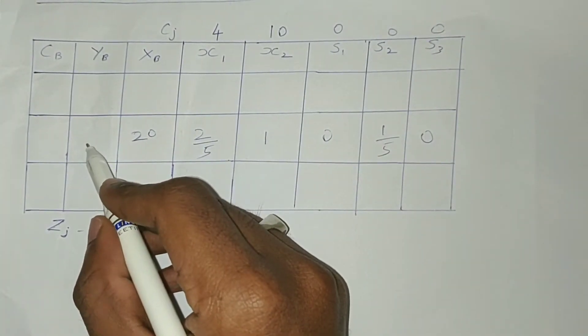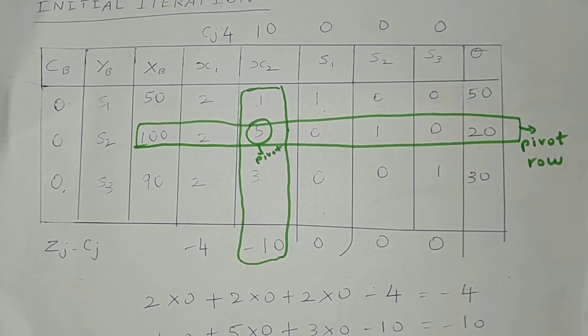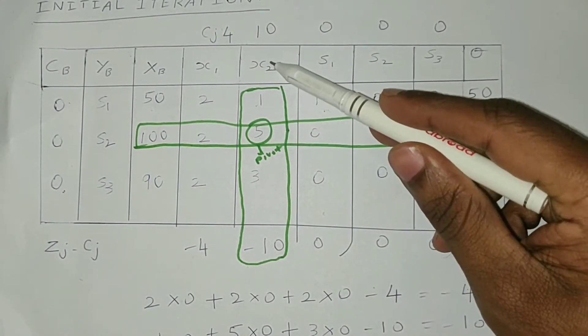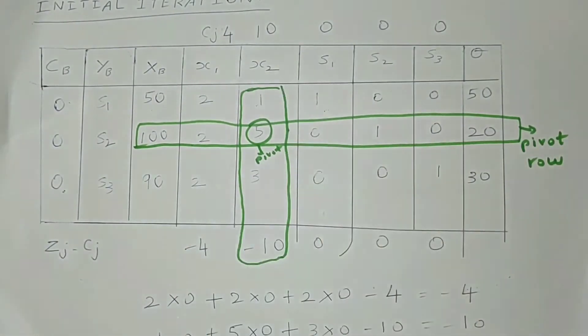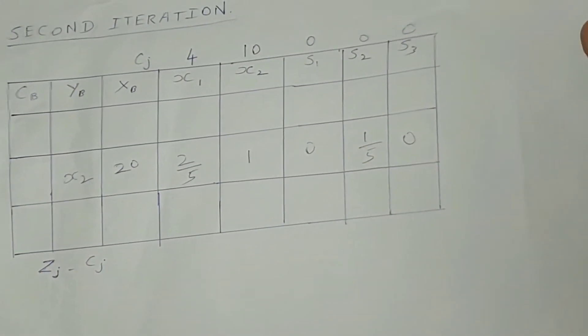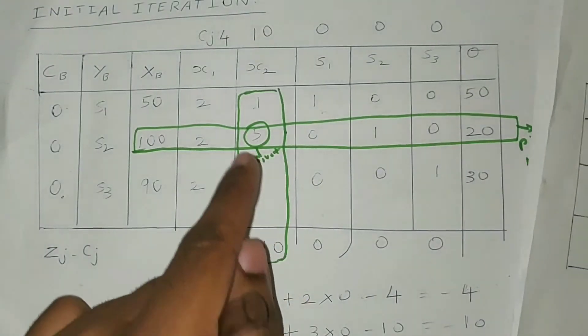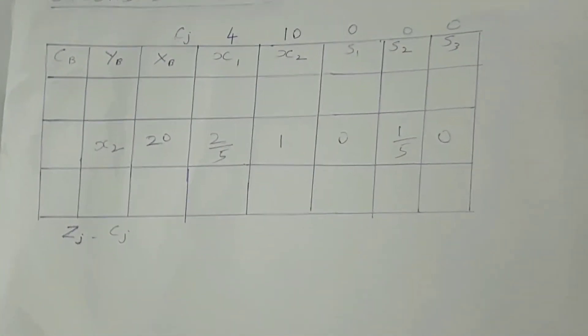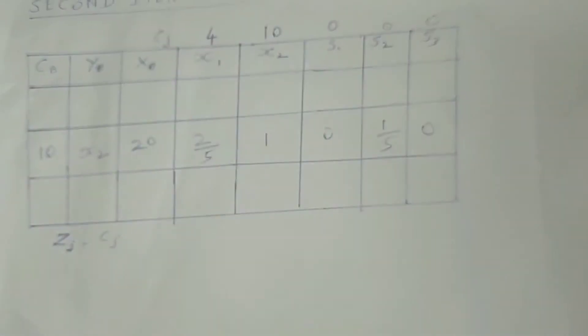We write x2 in yb for this row because the pivot element was in the x2 column in the initial iteration. So instead of s2, we write x2, and the coefficient of x2 is 10, so we write 10 in cb.